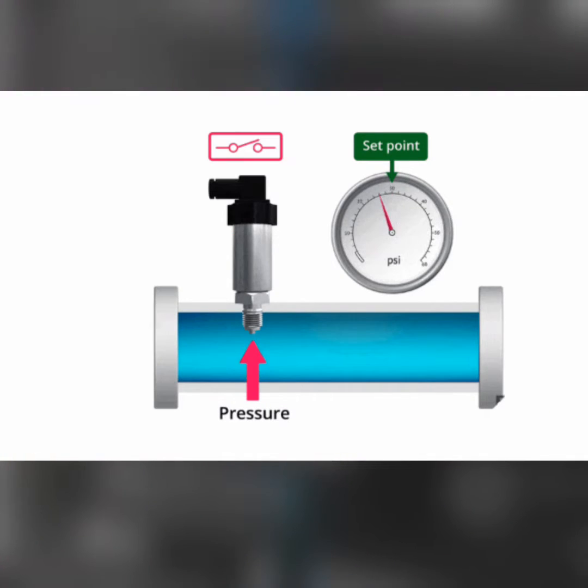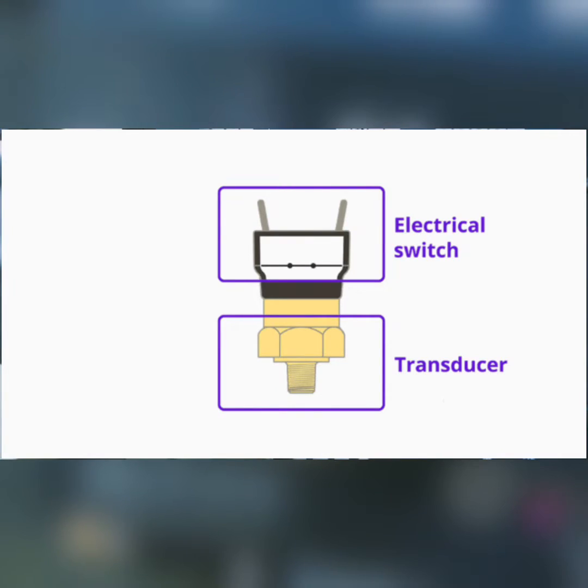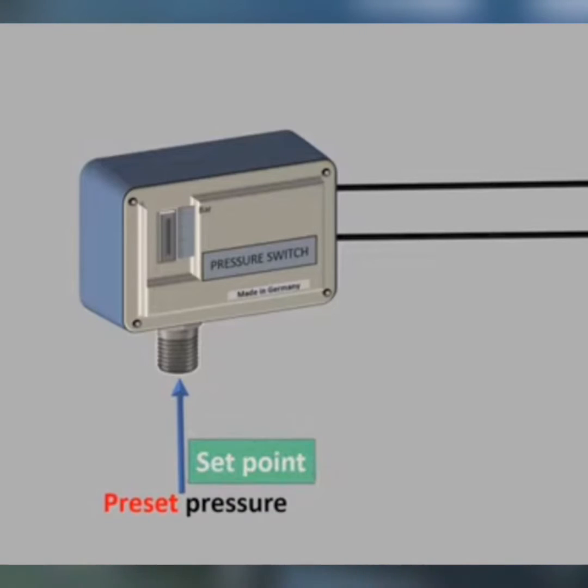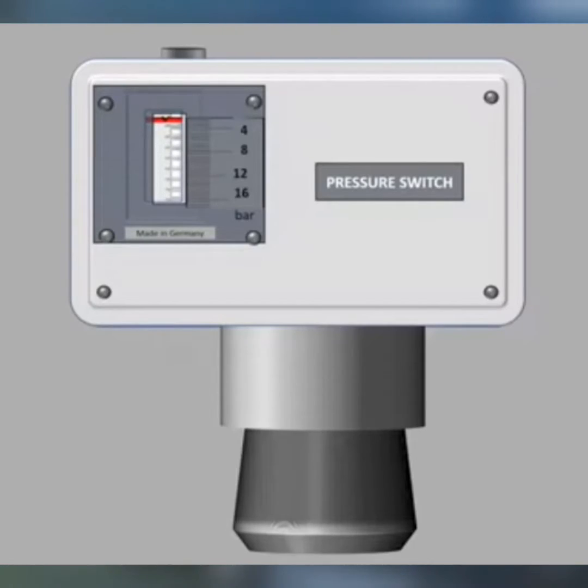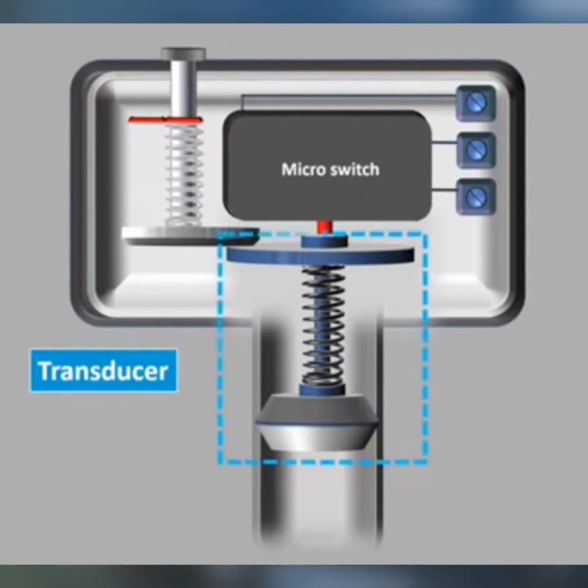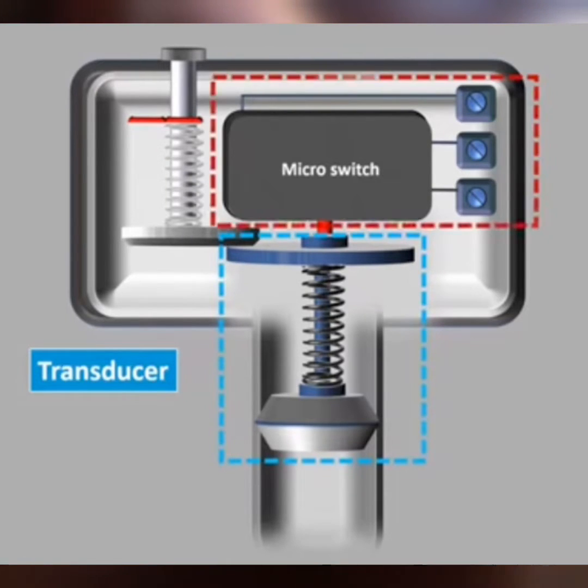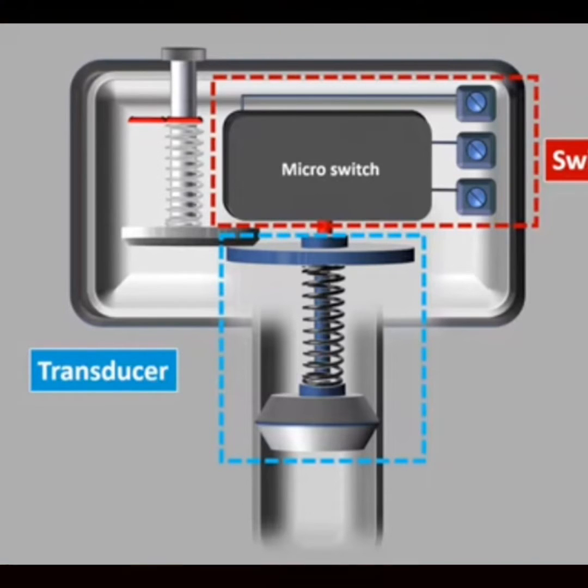Pressure switches are mechanical devices used to control or monitor pressure levels in systems. They come in handy in industrial processes to trigger alarms, activate or deactivate pumps, or initiate other system functions based on pressure thresholds.